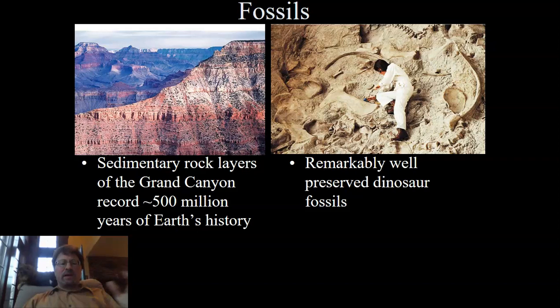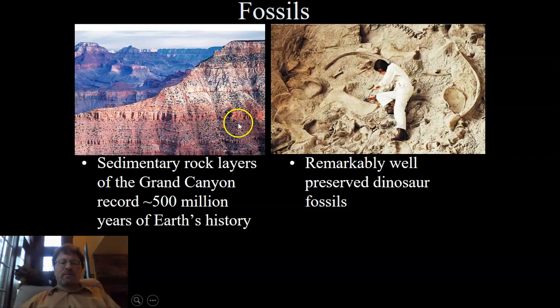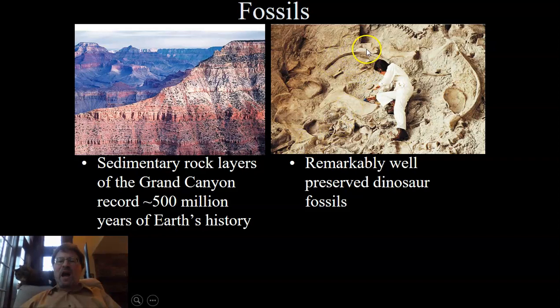Here on the left we have a picture of the Grand Canyon — very beautiful. Certain portions let you see down over a mile vertically to the base. The Grand Canyon records about 500 million years of Earth's history from top to bottom. On the right, we see well-preserved dinosaur fossils being carefully excavated. You wouldn't have to be a paleontologist to know these are dinosaur fossils — it's obvious even to the untrained eye. Here it's clearly the fossilized record of past living species.